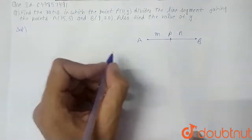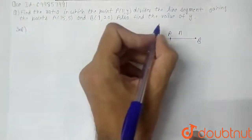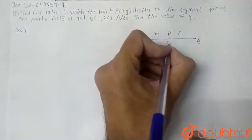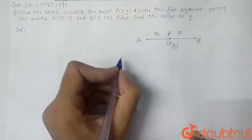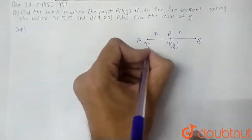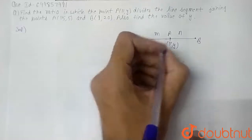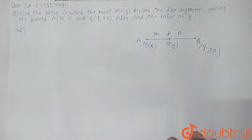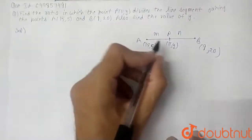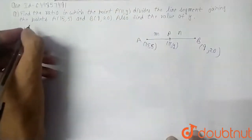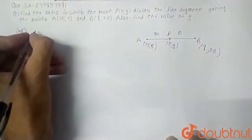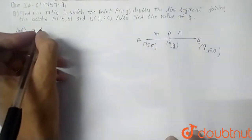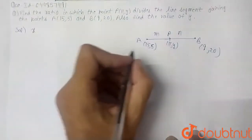We have to find the ratio as well as the value of y. The coordinates of point P are (11, y), the coordinates of A are (15, 5), and B is (9, 20). We have a formula for finding the ratio using x and y coordinates.